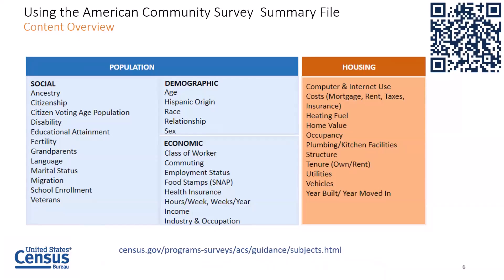Social characteristics include topics such as disability status, education, and language spoken at home. The American Community Survey also collects basic demographic characteristics such as age, sex, race, and Hispanic origin. Economic characteristics include such topics as commuting to work, employment status, and income. Housing characteristics include topics such as computer and internet use, housing costs, and vehicles available. These topics are used to produce more than 1,000 tables for local communities each year, and they power countless news stories every day.